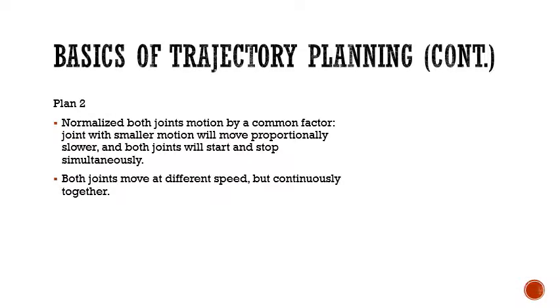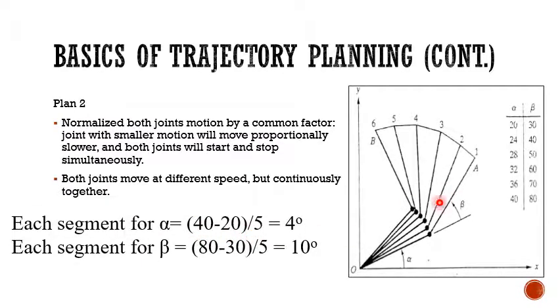Another method ensures that both joints reach their endpoint at the same time. In that case, you divide the motion in a nonlinear way — so it's 4° and 10° increments — and you can see that both joints start and stop at the same time. This is one way of achieving this trajectory.